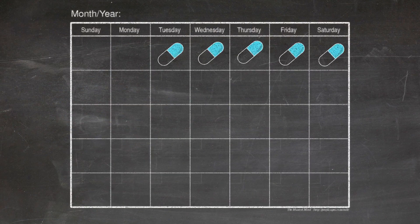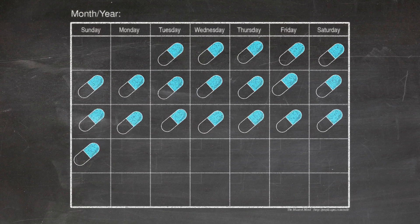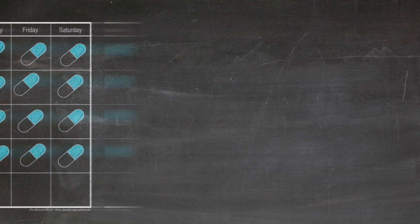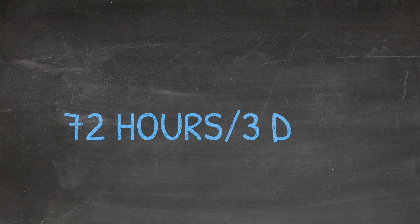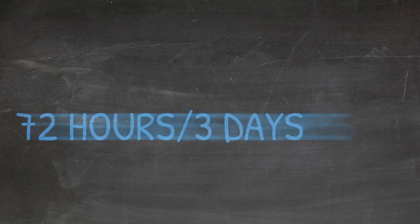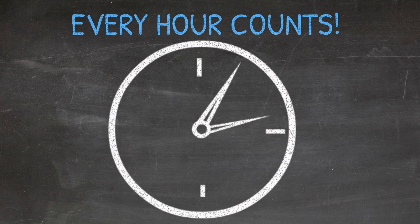It is not a single pill but rather a combination of medications taken every day for 28 days. PEP is effective if started within 72 hours or three days of a high-risk exposure. It's important to begin as soon as possible as every hour counts.